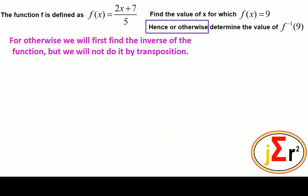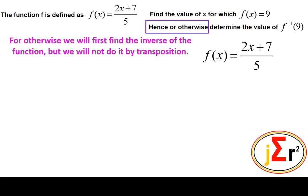For 'otherwise', we will first find the inverse of the function, but not by transposition — we will show another method. f(x) = (2x + 7) / 5. We will outline each step in the operation of the function, then do the reverse of each step in reverse order.